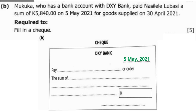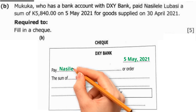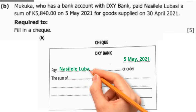Then for the 'Pay' field — whom are we paying? We are paying Nasilele. So we write Nasilele there.